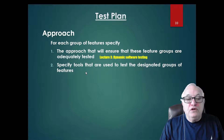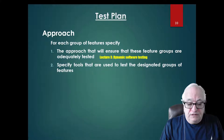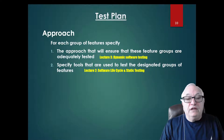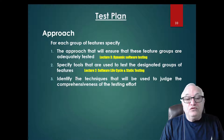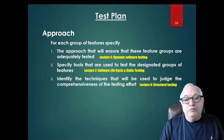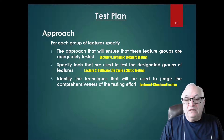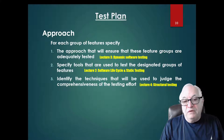Next, specify tools that are used to test the designated groups of features. For example, when we discussed the iterative life cycle in lecture two, we mentioned simulation as a tool, and you would also need a tool for structural test evaluation. Identify the techniques used to judge the comprehensiveness of the testing effort — for example, using structural testing to show that you've executed every line of code, showing 10% or 100% of functionality tested.